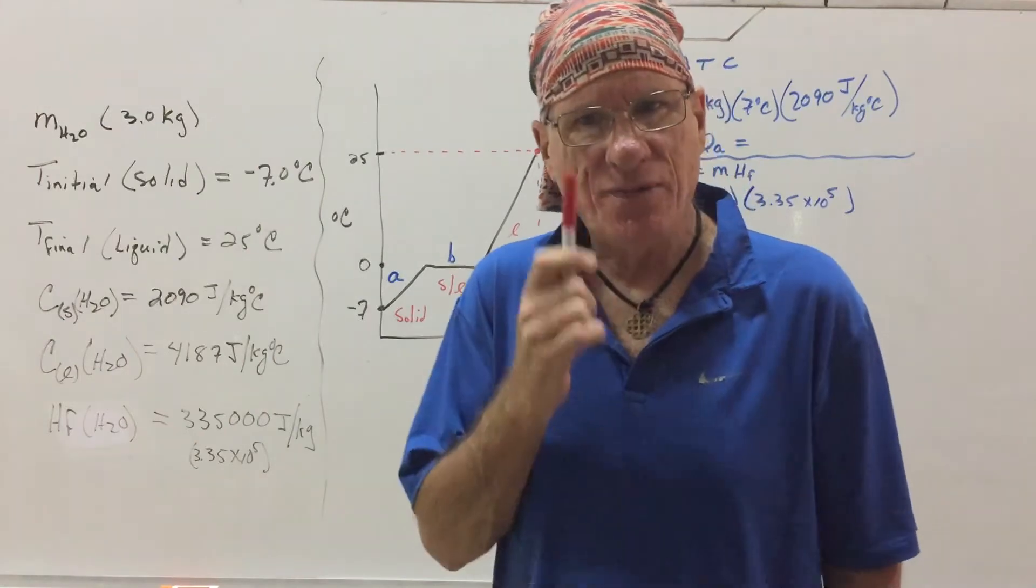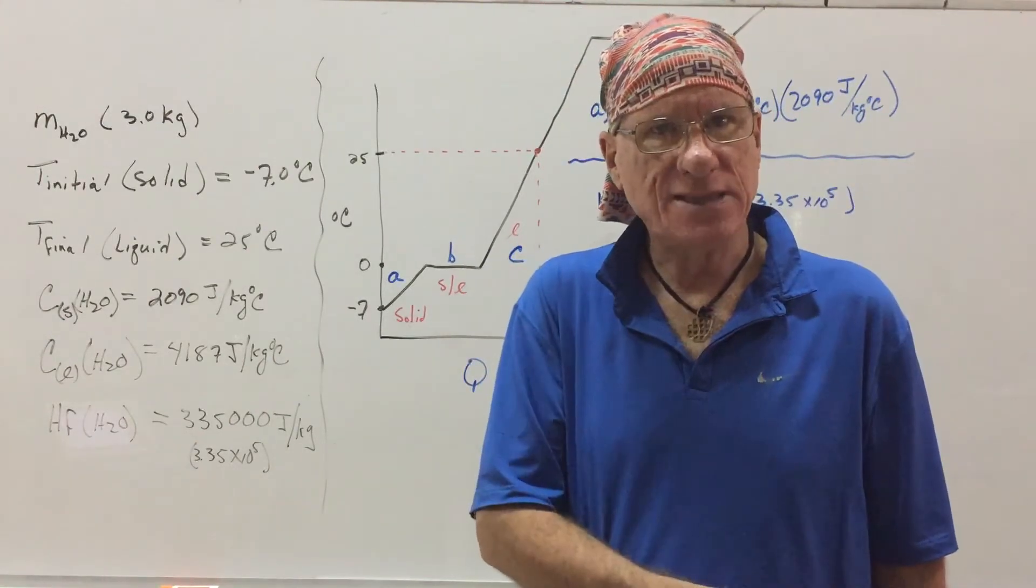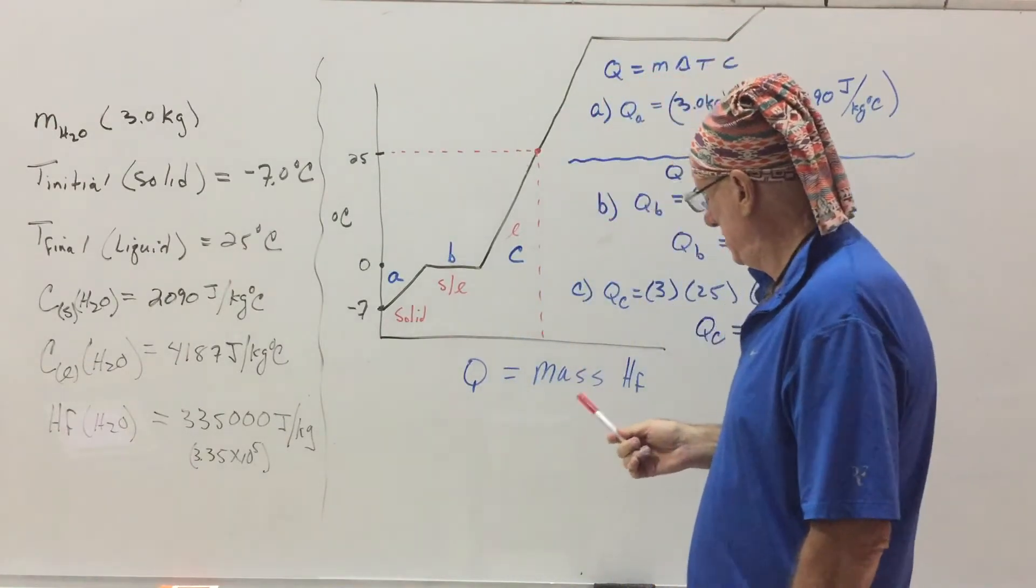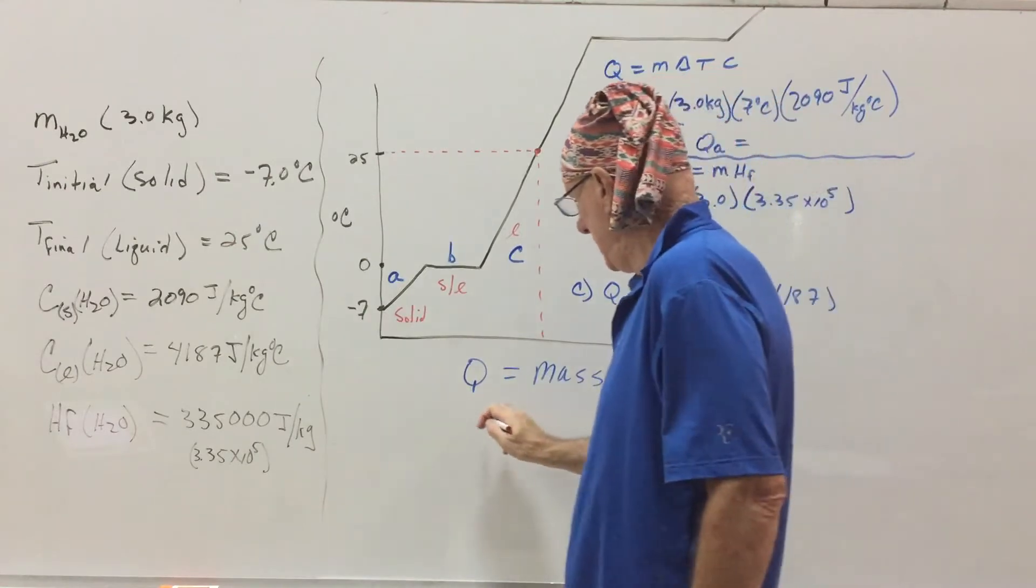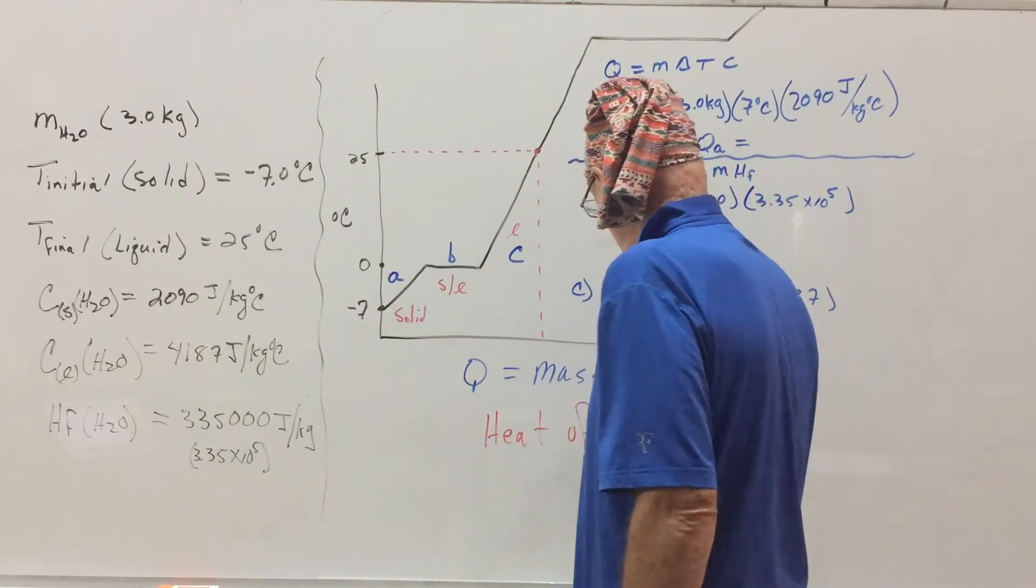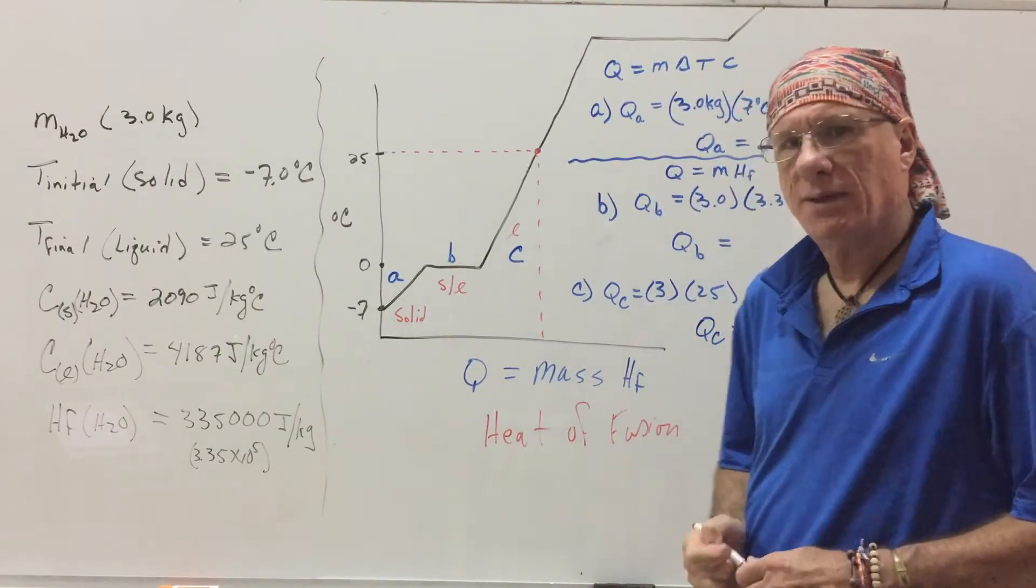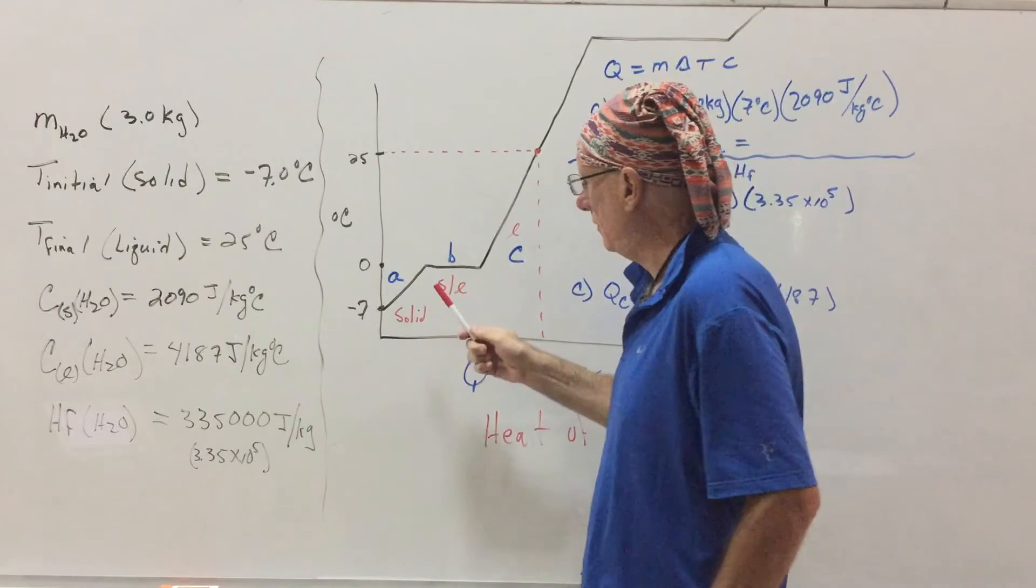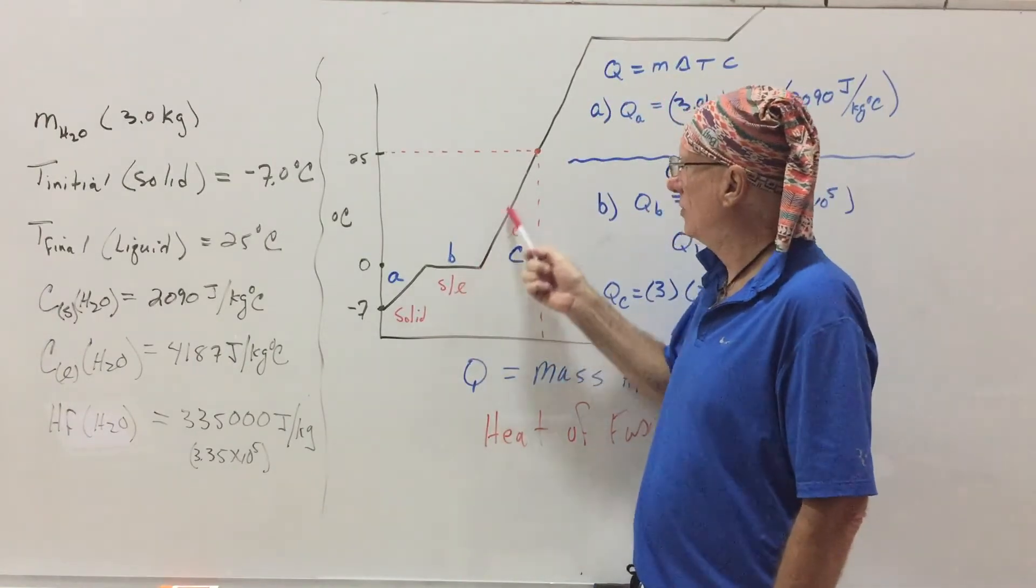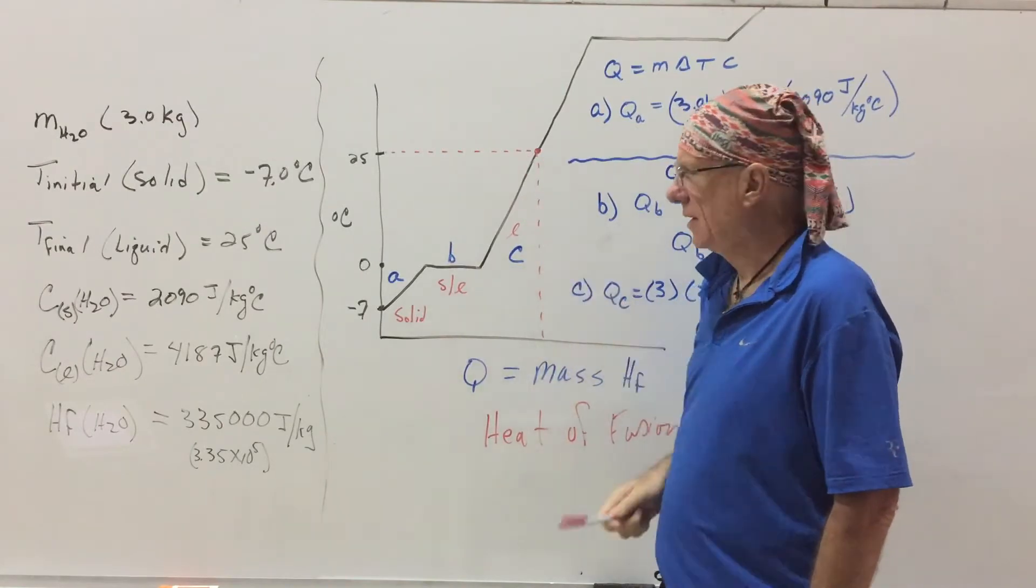Well, what's the name of the energy the ice absorbs to go from a solid to a liquid? The name of the energy is heat of fusion. Heat of fusion. So then, it's going to be zero degrees Celsius, and then it's going to climb up to 25 degrees Celsius. Clear?